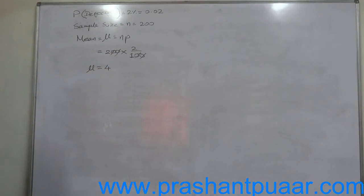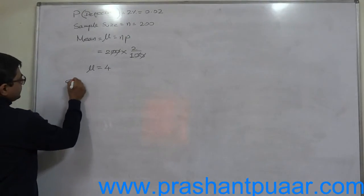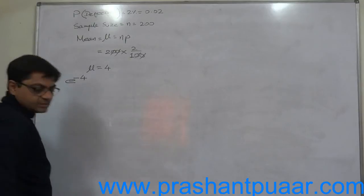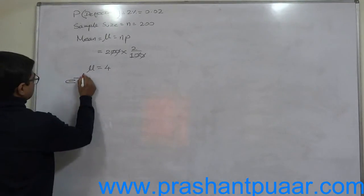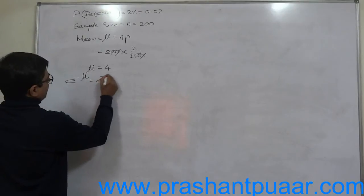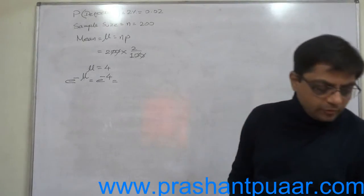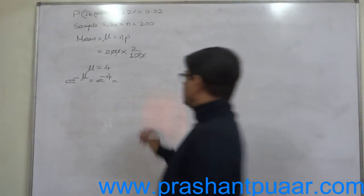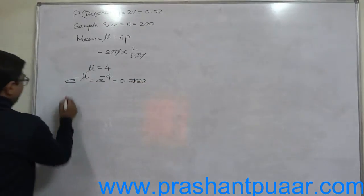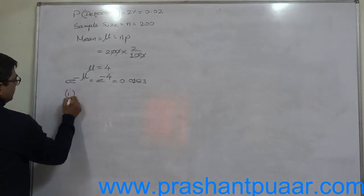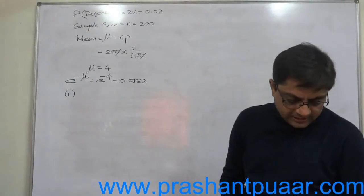Now we can use the Poisson distribution to solve this problem. The mean is 4, so e raised to minus mean is e raised to minus 4, which equals approximately 0.0183.